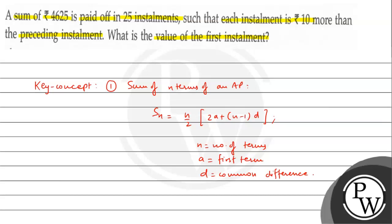Each installment being 10 rupees more than the previous one means the next installment minus the previous installment equals Rs. 10, so the common difference is Rs. 10.